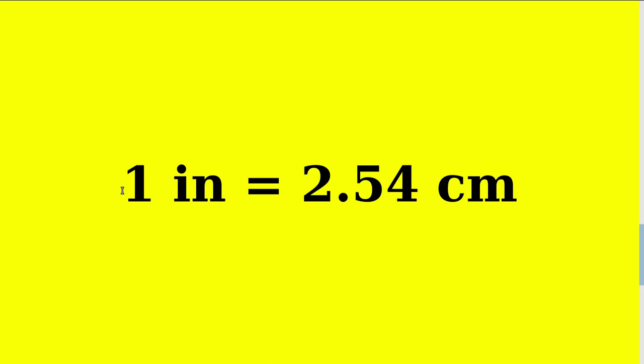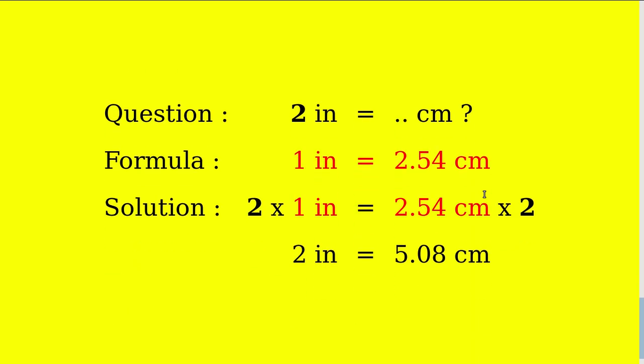One inch equals 2.54 centimeters. That's the formula. And then this is the answer section, so just write down the question again: two inches equals how many centimeters?